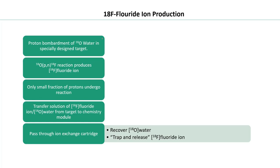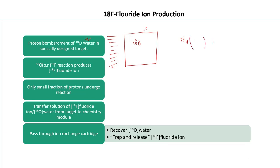For F-18 fluoride ion production, O-18 water is placed inside a specially designed target that contains the water during bombardment. A beam of protons is bombarded onto this target, and as a result, O-18 is converted to F-18 via a p,n nuclear reaction — the oxygen captures a proton, converts to F-18, and emits a high-energy neutron.